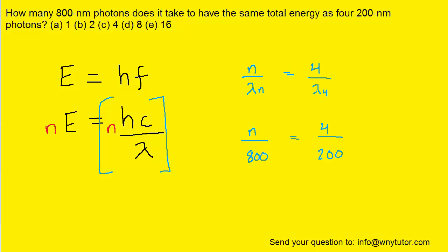And then, at this point, we could solve for n, which is the unknown number of photons. We can multiply both sides of the equation by 800, so that it cancels out on the left-hand side. And when we solve for n, we can see that it equals 16, so the correct answer to this question would be choice E.